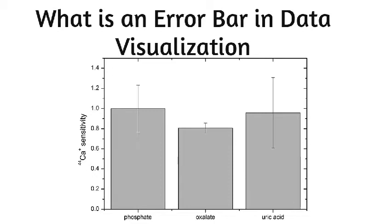A short error bar shows that values are concentrated, signaling that the plotted average value is more likely, while a long error bar would indicate that the values are more spread out and less reliable.